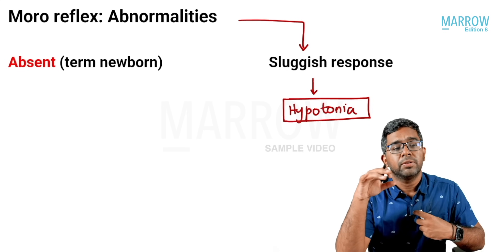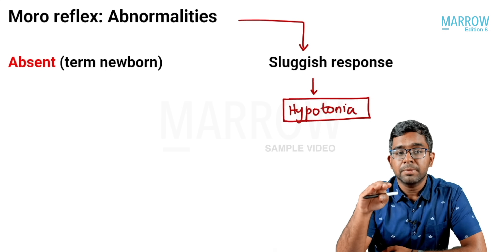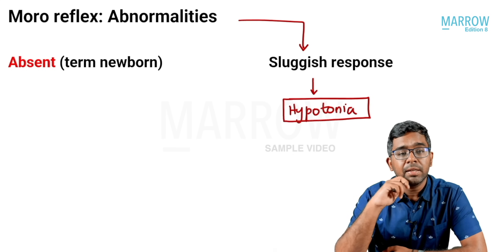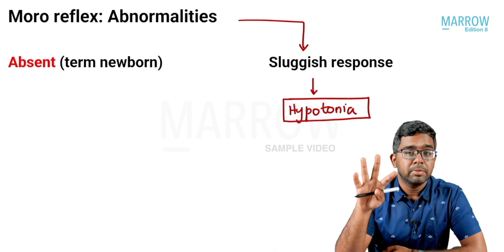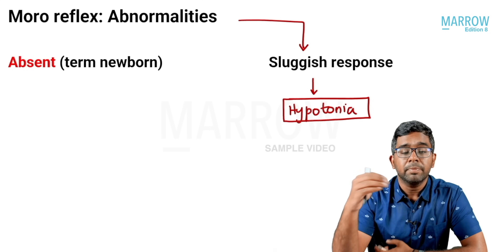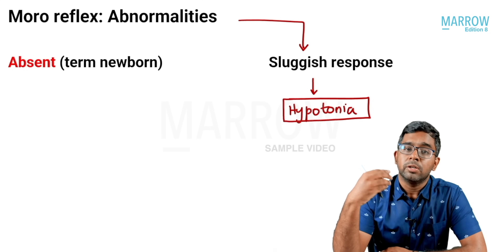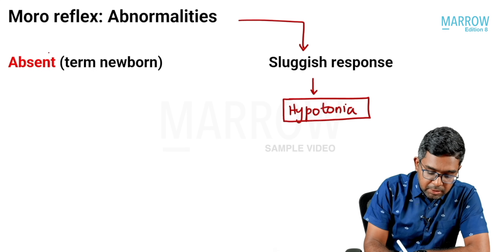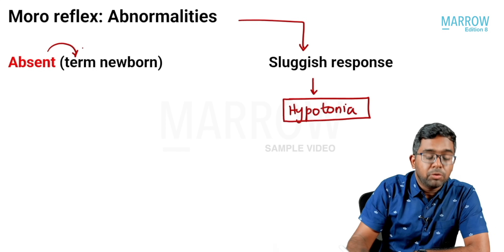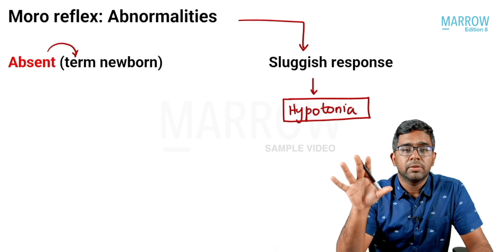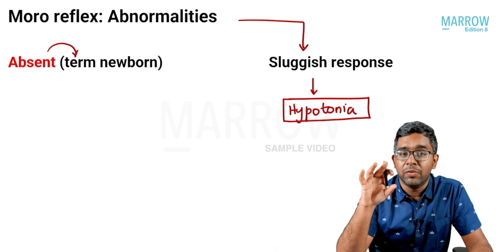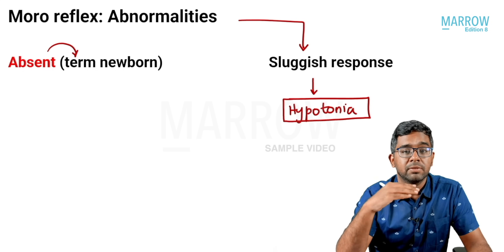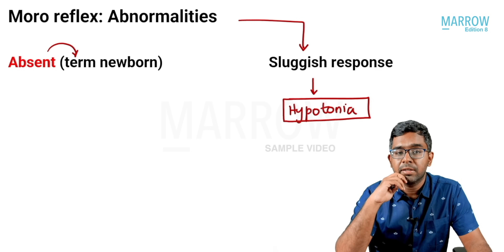What about conditions where you get an absent Moro reflex? In a preterm baby born before 28 weeks of gestation, Moro reflex is normally absent. But in a term baby, an absent Moro reflex — or in fact any absent neonatal reflex — indicates a problem in the brain, since the brain is the structure needed for elicitation of all neonatal reflexes.